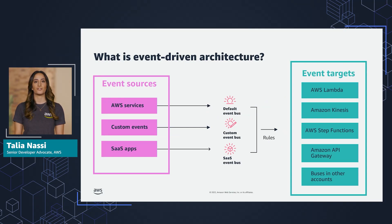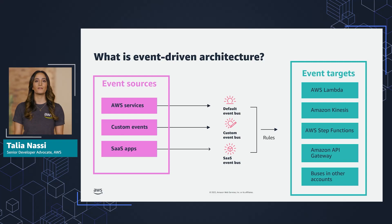In event-driven applications, you have the event producer, the event bus, and the event consumer. The event producer is the event source that the events come from — this can be an AWS service, a custom event, or an event that comes from a third-party SaaS app. The event bus acts as an event router to route the events. The event consumer, or target, listens for events and acts only upon the events they're interested in.